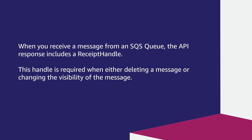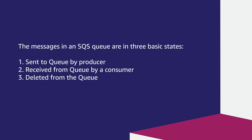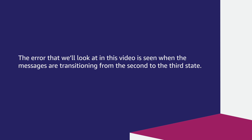When you receive a message from an SQS queue, the API response includes a receipt handle. This handle is required when either deleting a message or changing the visibility of the message. The messages in any SQS queue are in three basic states: one, sent to the queue by a producer; two, received from the queue by a consumer; and three, deleted from the queue. The error we'll look at in this video is seen when messages are transitioning from the second to the third state.